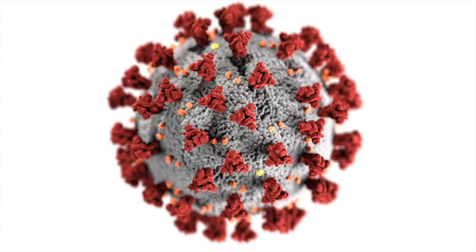The virus SARS-CoV-2 is the known cause of coronavirus disease 2019, or COVID-19. In this image from the Centers for Disease Control (CDC), we can see the spike protein, or S-protein, colored in red, covering the viral membrane. S-protein facilitates viral entry into host cells when its receptor-binding domain (RBD) interacts with human angiotensin converting enzyme 2 (hACE2). Because of its central role in viral entry, S-protein is a main target for vaccine and antiviral drug development.